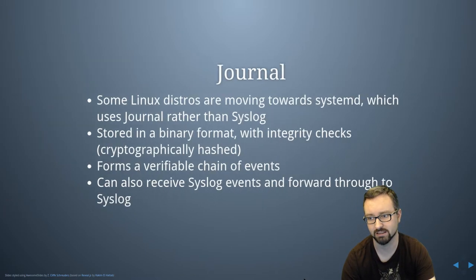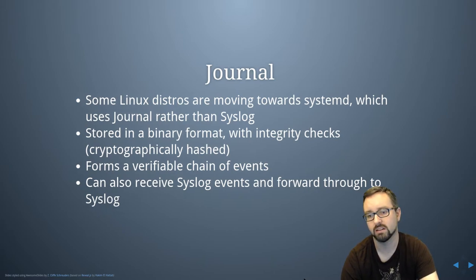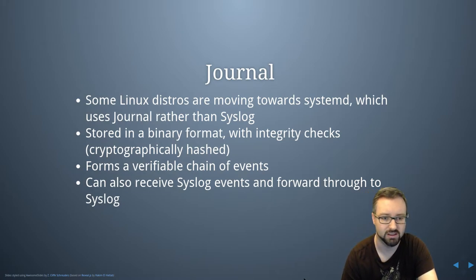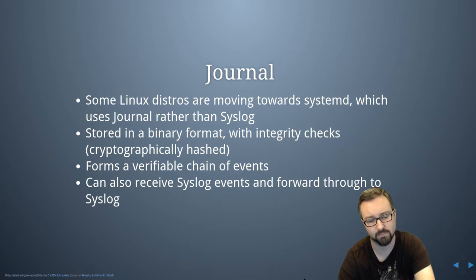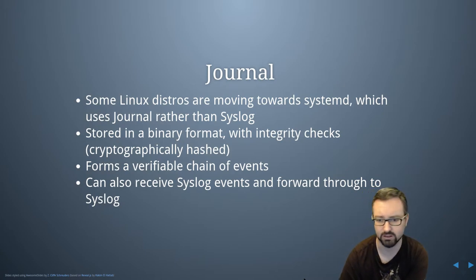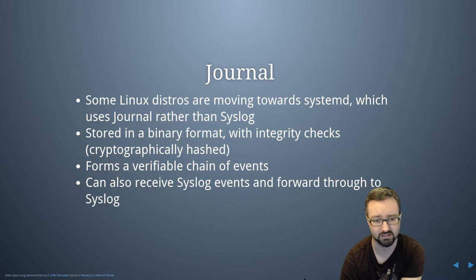So if you've got Apache logs and syslogs and whatever else and you want to see what's happened on a specific date — if each of those tools uses a different date format that could be quite difficult — whereas if you've normalized your logs you can just say what happened on this day and get all that information back easily. Newer Linux systems use journald on systemd systems, rather than or in addition to syslog. Journald stores in a binary format rather than text-based format, and it has integrity checking baked into it with cryptographic hashing, making it more difficult to alter logs. It forms a verifiable chain of events, can receive syslog events, and can forward things through to syslog, so sometimes you'll have journald and syslog on the same system to get the benefits of both.